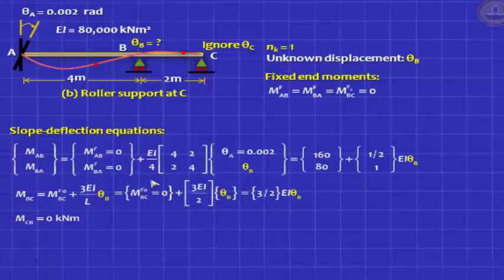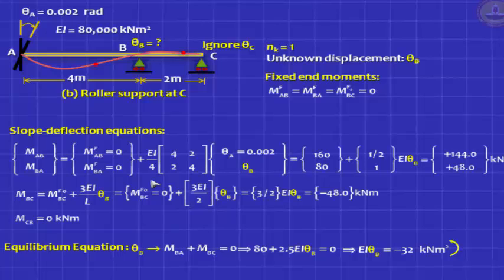Next step, you invoke your equilibrium equation. 1 unknown theta B. So the equilibrium equation is MBA plus MBC is 0. Take the equation for MBA, take the equation for MBC, add up those 2 values, solve for EI theta B, plug in that into your slope deflection equation, you have got all the answers. These answers are exactly what we got yesterday. So we are getting the same result with approximately half the effort. We do not solve 2 simultaneous equations.